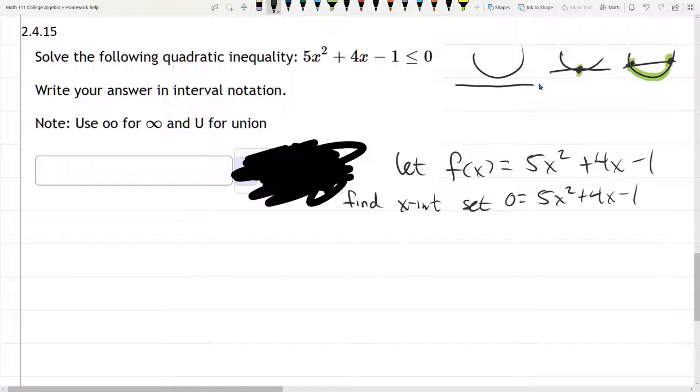From here, you always have three ways. Complete the square is tricky because of this 5 in front of the x-squared. So I'm not going to go complete the square here. We can try to factor and get lucky.